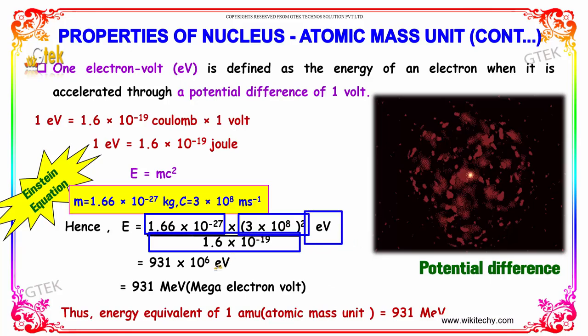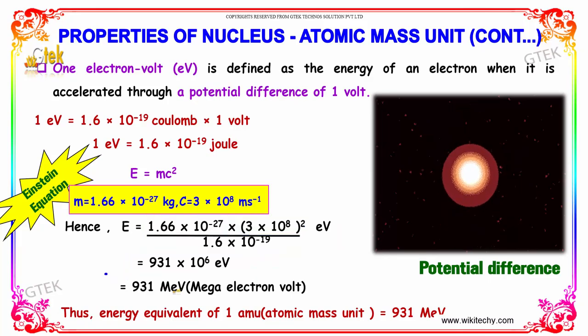Finally we got the value as 931 into 10 power 6, that's E is equal to 931 mega electron volt.